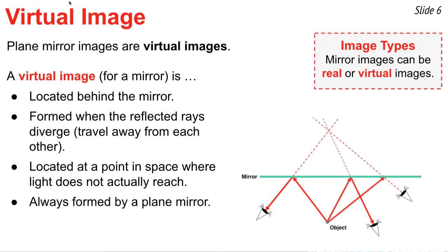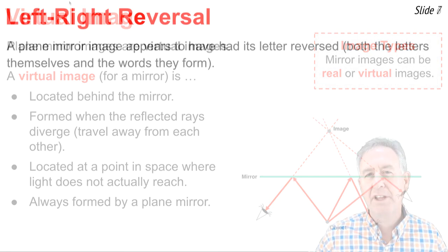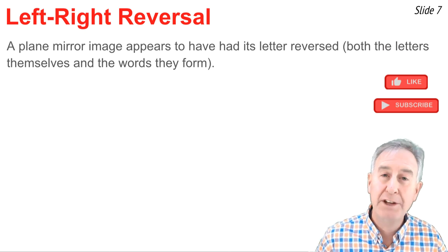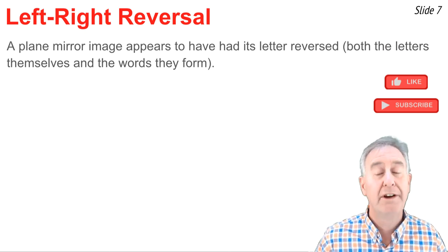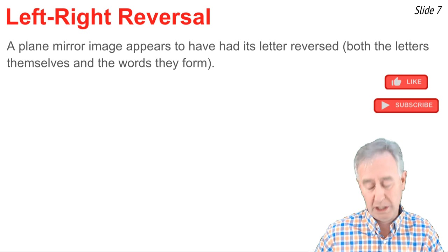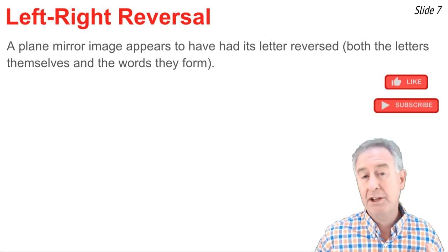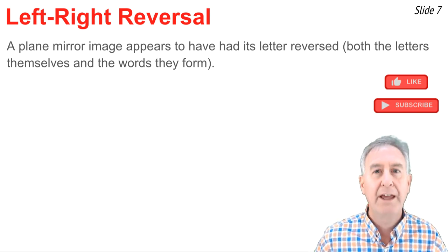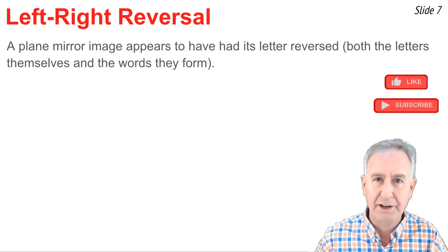The last characteristic of plane mirror images is the idea of the appearance of left-to-right reversal. For instance, if you wore a shirt and it had some lettering on it, and you looked in the mirror, you would notice that the word was written backwards and that the letters were turned around, as though the mirror has flipped the letters. But they haven't.